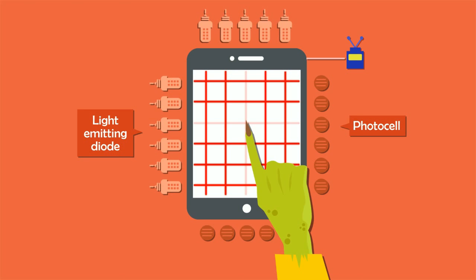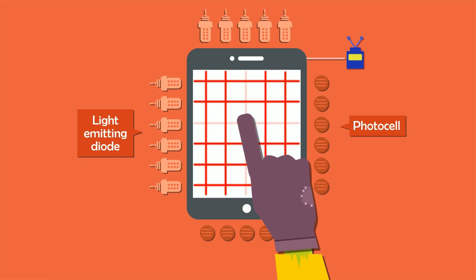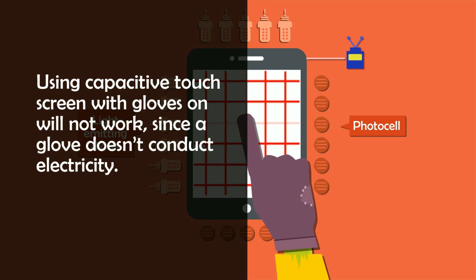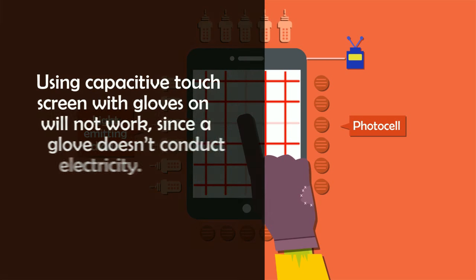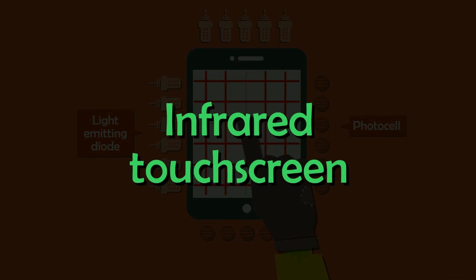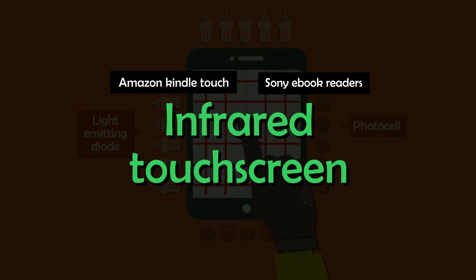Since you are interrupting a beam, infrared screens work just as well whether you use your finger, a stylus, or even with gloves on. But in the case of capacitive touchscreens, wearing gloves will not work since gloves don't conduct electric current. You'll find infrared touchscreens mostly used in the Amazon Kindle Touch and Sony eBook readers.